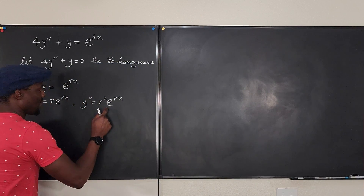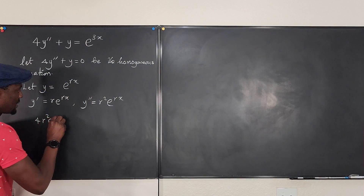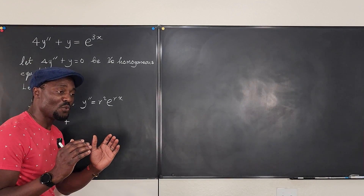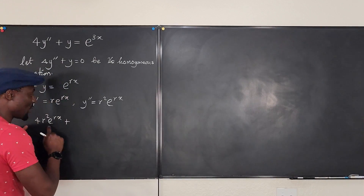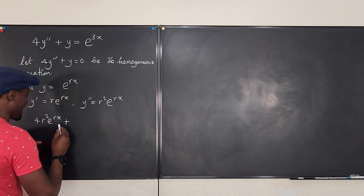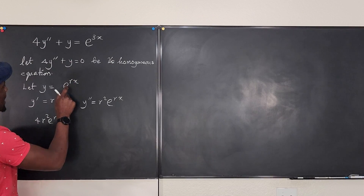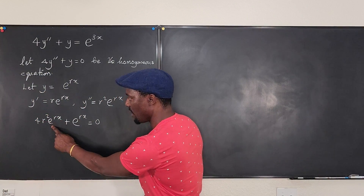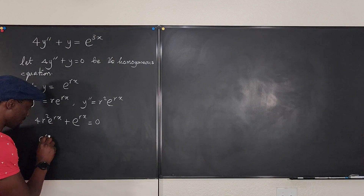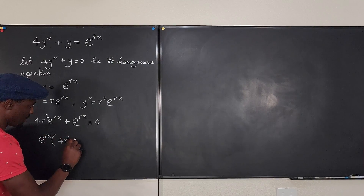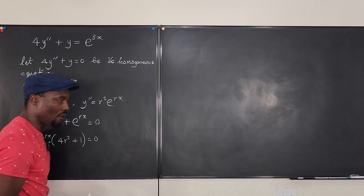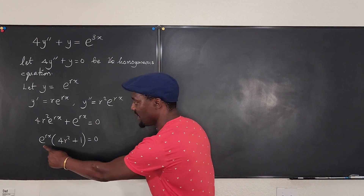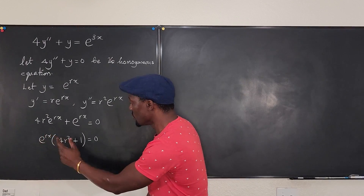Plugging into the homogeneous equation: 4·(r²e^(rx)) + e^(rx) = 0. Factoring out e^(rx) gives e^(rx)(4r² + 1) = 0. Since e^(rx) is an exponential function it is never zero, so the only factor that can be zero is (4r² + 1) = 0.